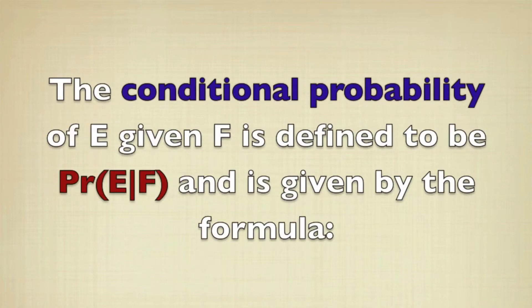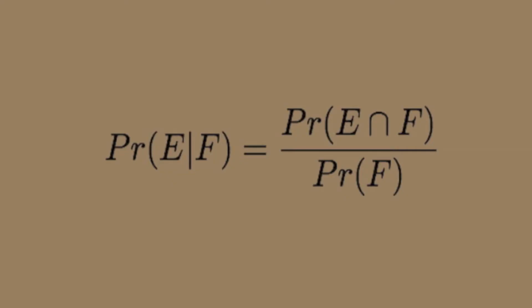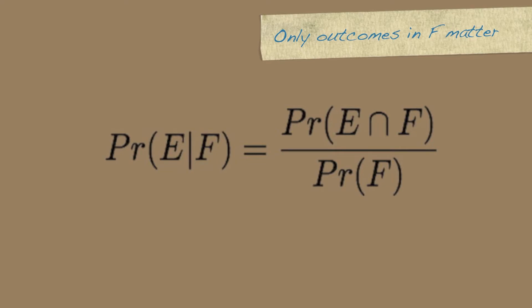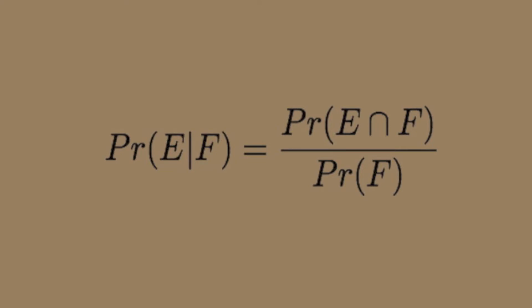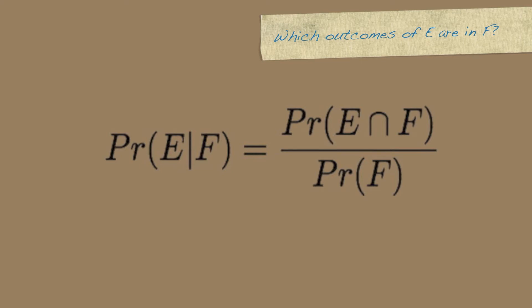The conditional probability of an event given another is defined by this symbol here, and it's given by this formula. What this formula is saying is that only the events in F matter, so that's our sample space, and the outcomes of E that are in F are the only ones that we care about.